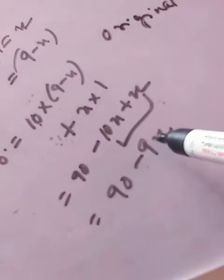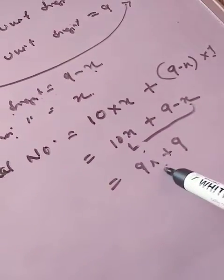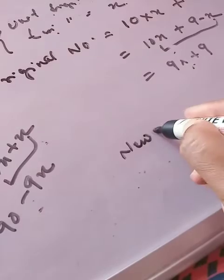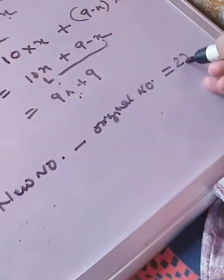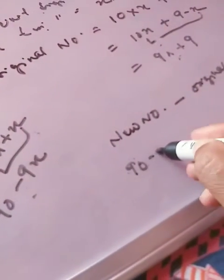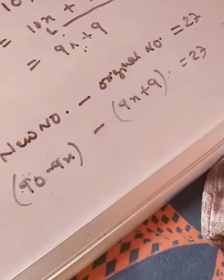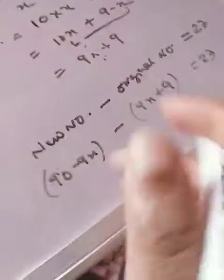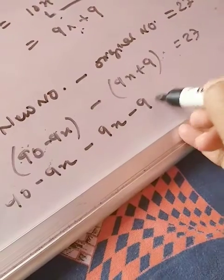According to the question, the number obtained by interchanging the digits exceeds the original number by 27. So the equation is: new number minus original number equals 27. That is, (90 minus 9x) minus (9x plus 9) equals 27. Opening the bracket: 90 minus 9x minus 9x minus 9 equals 27.